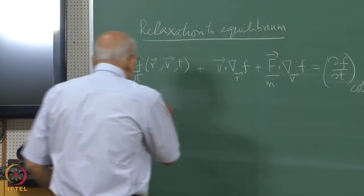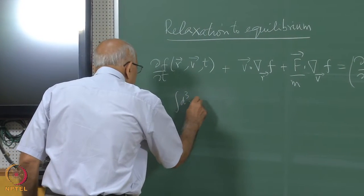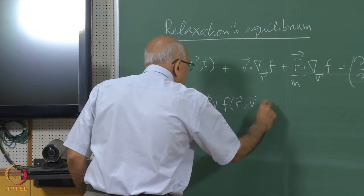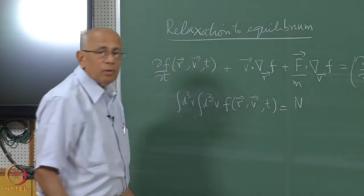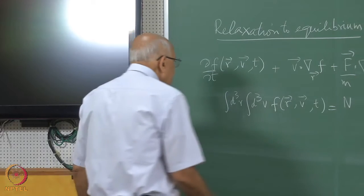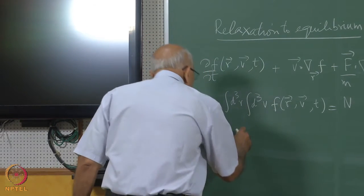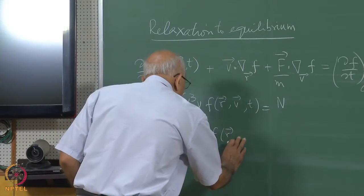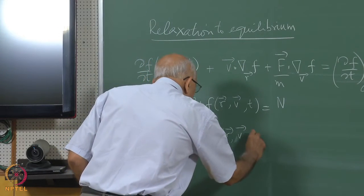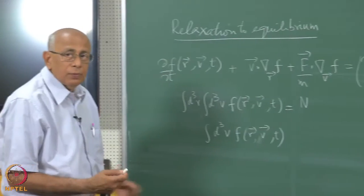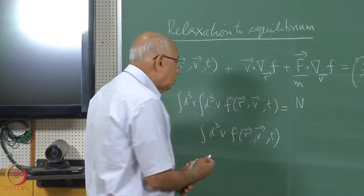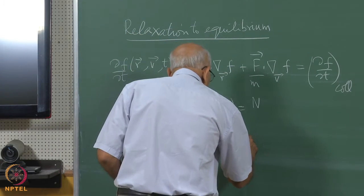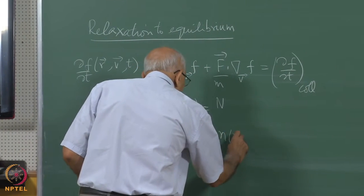Let us write down the normalization. The normalization of F is: integral D3R integral D3V of F of V, T equal to N, the total number of particles in the system. If you integrate D3V over F of R, V, T alone, you get a function of R and T which is the number density — it changes as a function of position and time. So by definition this equals N of R and T.